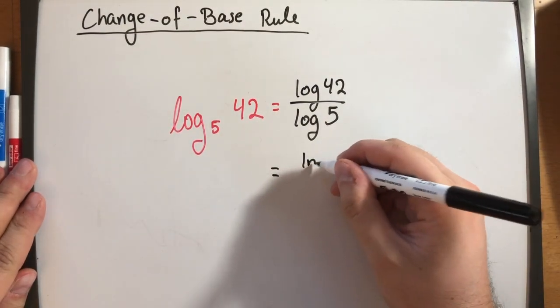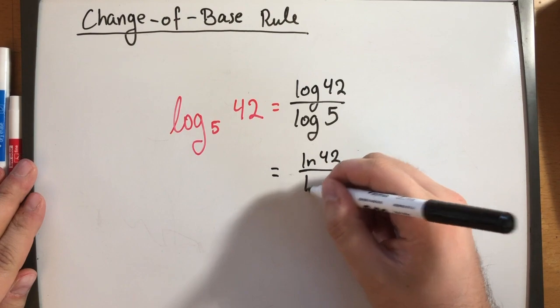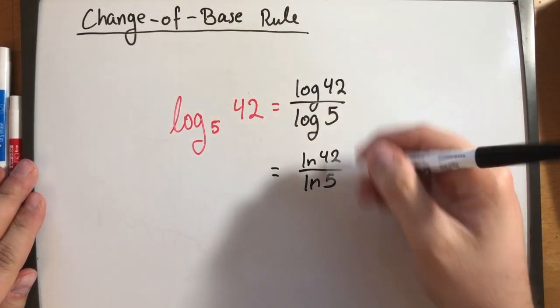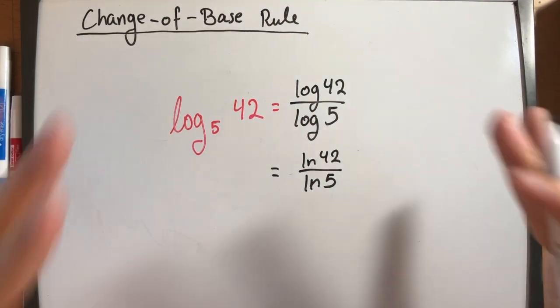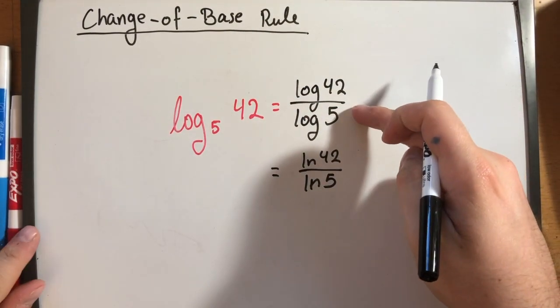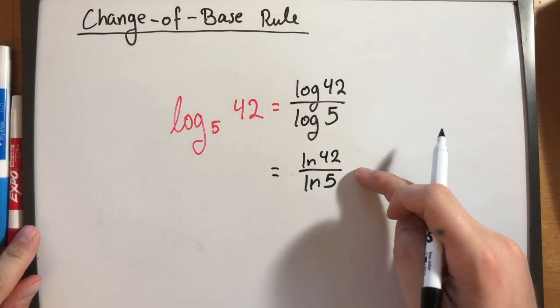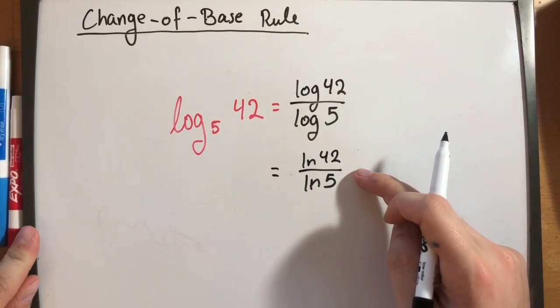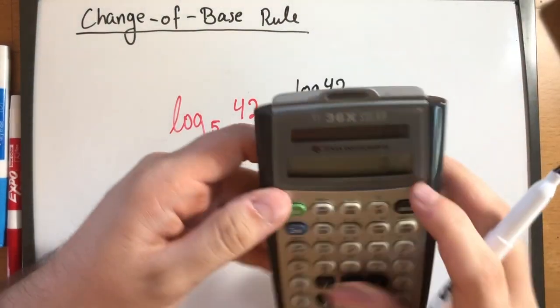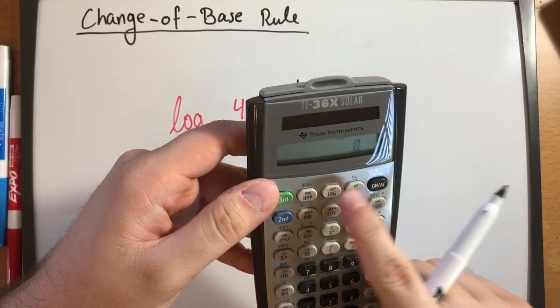You could also do, if you want to, ln 42 over ln 5 with the natural log. Both of these will give you the same exact answer. But here we use the change of base rule to change to base 10. Here we use the change of base rule to change to base e. But it doesn't matter because our calculator can do either of them.